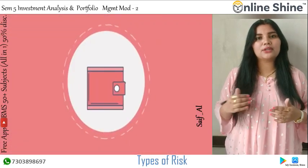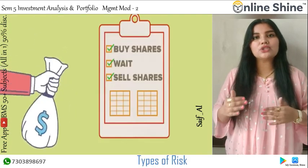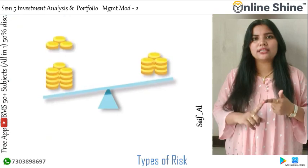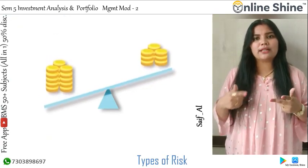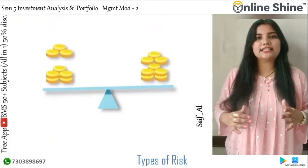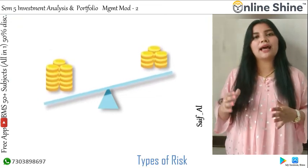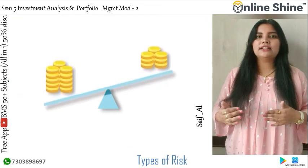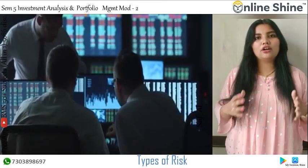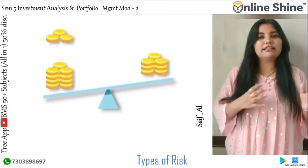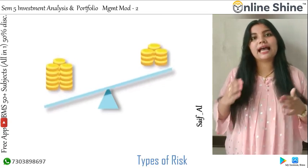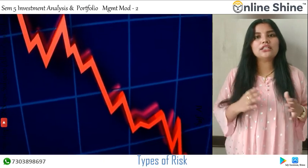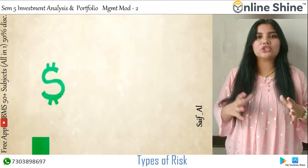Interest rate risk arises due to the variability in interest rates from time to time, and particularly affects debt securities like bonds and debentures as they carry a fixed coupon rate of return. A change in interest rates establishes an inverse relationship with the price of a security — price of security tends to move inversely with changes in rate of interest. Long-term securities show greater variability in price with respect to interest rate changes than short-term securities. While cash equivalents are less vulnerable to interest rate risk, long-term bonds are more vulnerable.